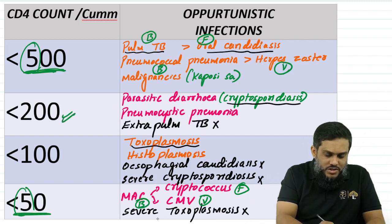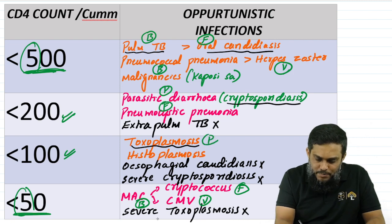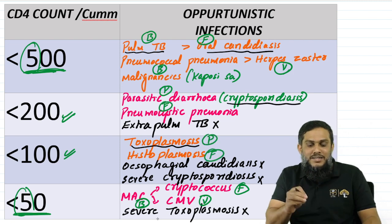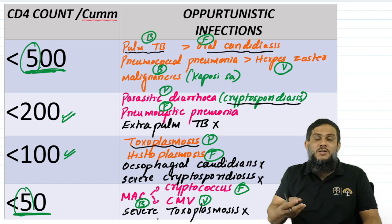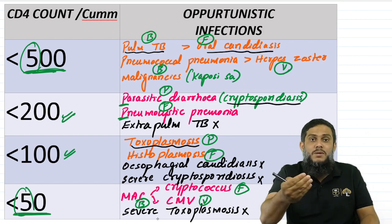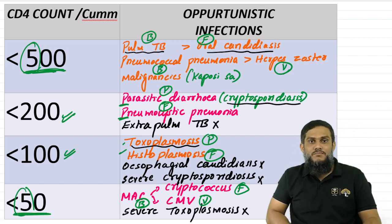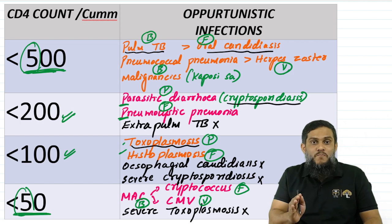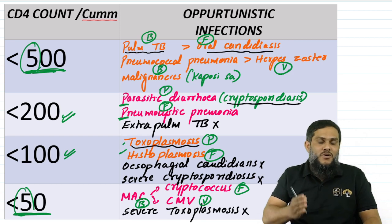For the middle two — less than 200 and less than 100 — think parasite and fungus. At less than 200: parasitic diarrhea (cryptosporidium) and pneumocystis pneumonia — remember as 'PP.' At less than 100: toxoplasmosis and histoplasmosis — they rhyme, so they're easy to remember. Hope this simplifies the topic. All the best for your exams — prepare well and do well!